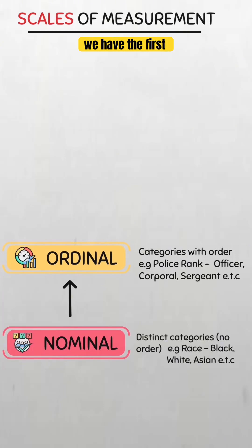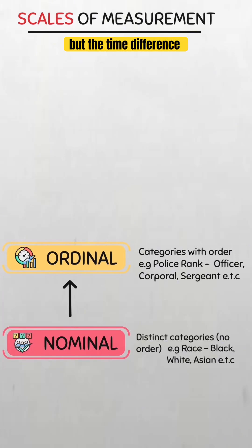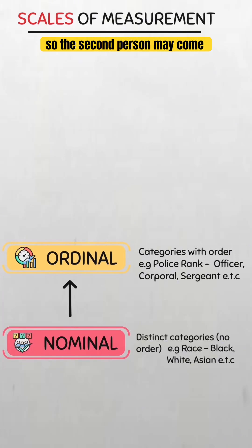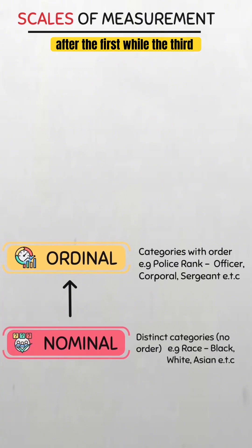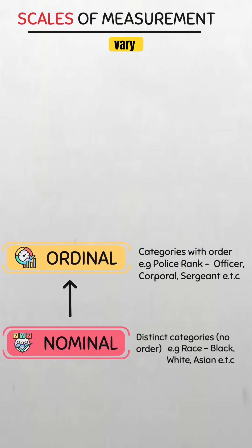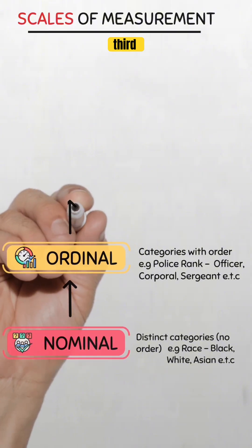It's like a race — we have first, second, and third place. There is a clear order, but the time difference between positions may vary. The second person may come in 5 seconds after the first, while the third person came in 30 seconds after the second. So the distance between the positions varies. This is the ordinal scale: distinct categories which are ordered.